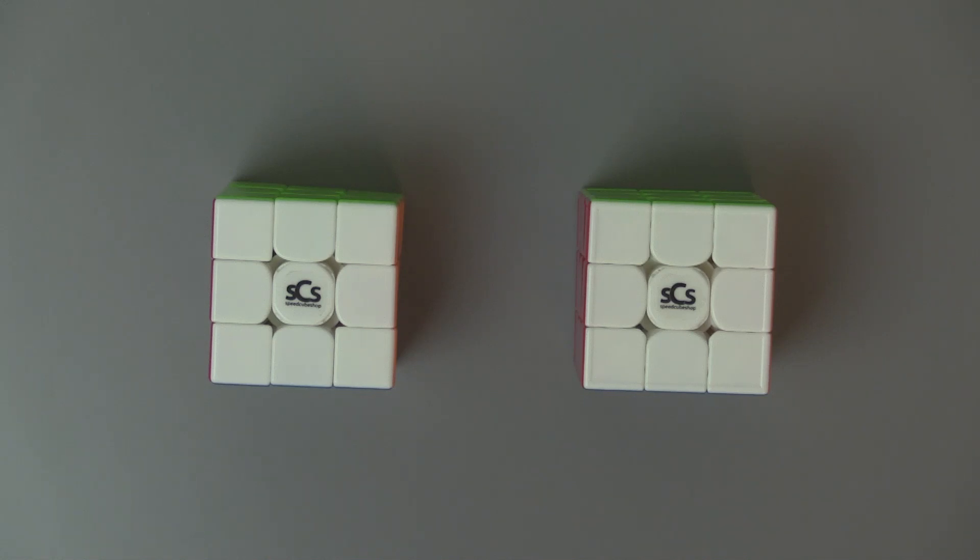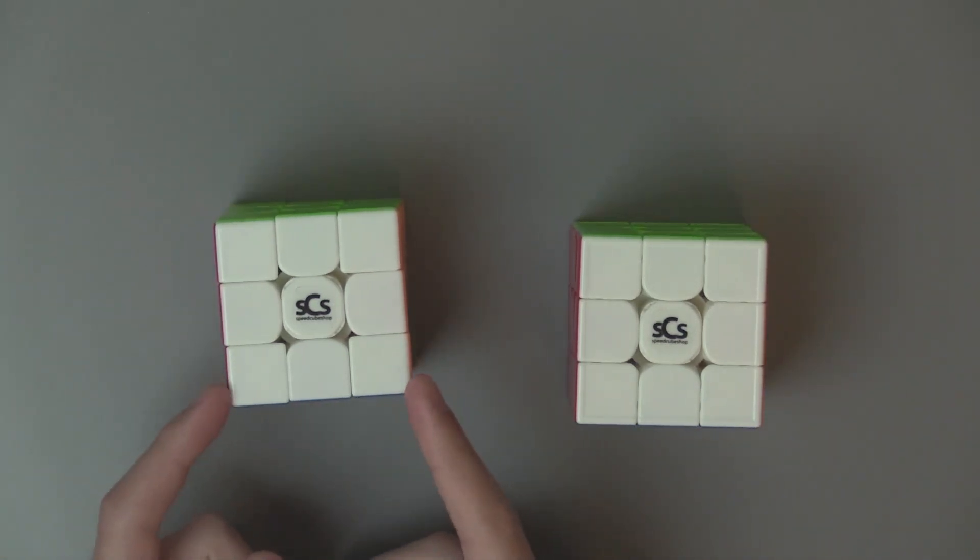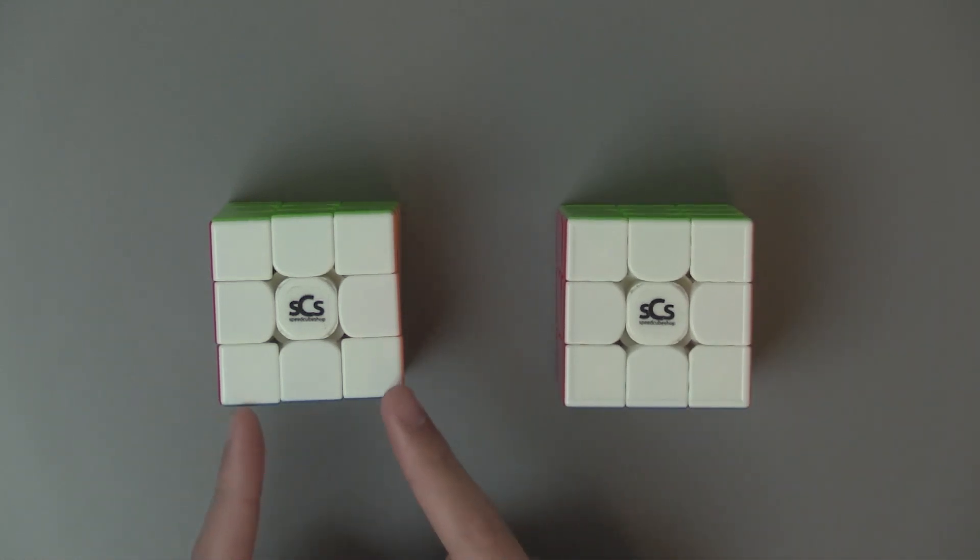So next up, one of the biggest differences, magnet strength. So the WRM was made after the GTS-3M, and WR is supposed to stand for without ridges. So essentially, what they were trying to do is just make the exact same cube of the GTS-3M, but take ridges off.